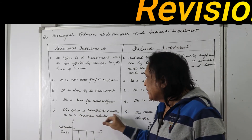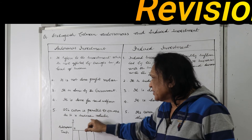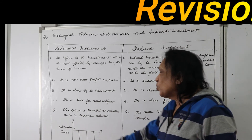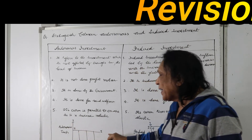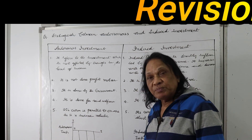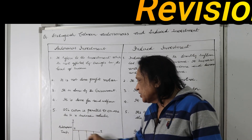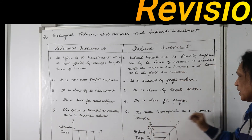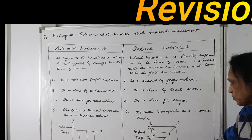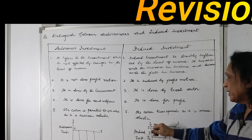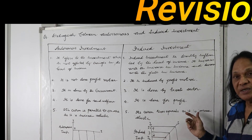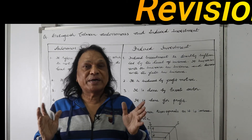Autonomous investment is done for social welfare — when the government provides roads, street lighting, schools, and colleges. Induced investment is done purely for profit motive. On the graph, with income on the x-axis and investment on the y-axis: the autonomous investment curve is parallel to the x-axis — whether income goes from Q to Q1 to Q2 or back, it remains constant. The induced investment curve rises upward — as income goes from OQ to OQ1, investment rises from OI to OI1, and comes down when income falls.